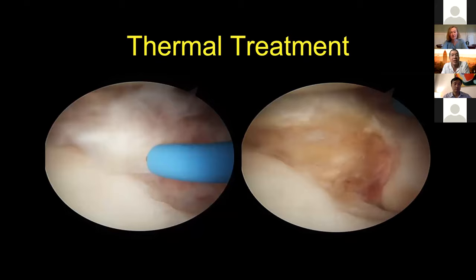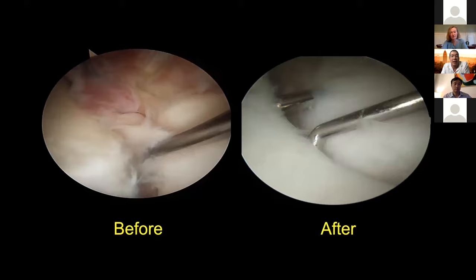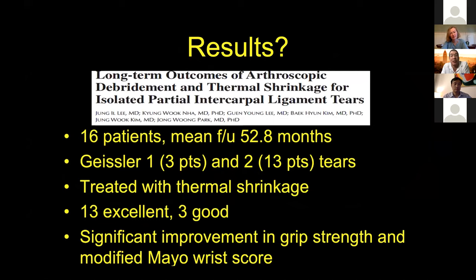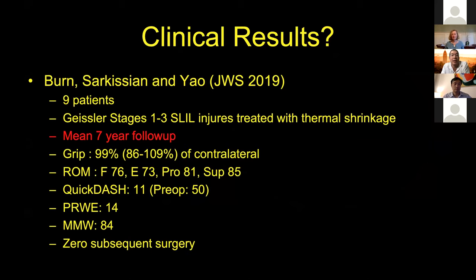We showed in our lab that we believe there's a denervation effect — heating of the ligament led to ablation of neuronal markers typically seen in the ligament. Whether re-innervation occurs is unknown, but at time zero there's some denervation contributing to pain relief. Combined scapholunate and LT studies of 16 patients showed quite good outcomes. For thermal shrinkage, here's what it looks like before and after treatment, and here's a higher grade with K-wires traversing across the LT interval for a Geissler grade three.